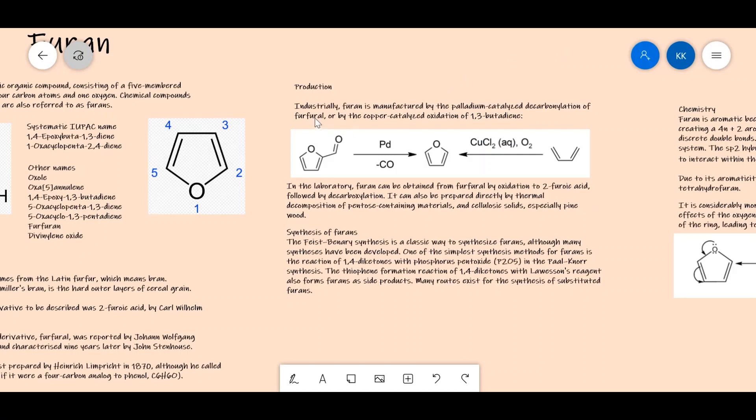Now let's look at production. Industrially, furan is manufactured by the palladium-catalyzed decarbonylation of furfural or by the copper-catalyzed oxidation of 1,3-butadiene. This pathway here is the copper-catalyzed oxidation of 1,3-butadiene, and this pathway is the palladium-catalyzed decarbonylation of furfural.